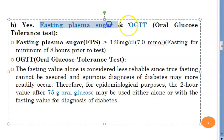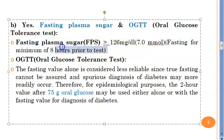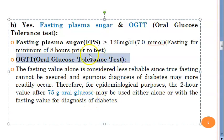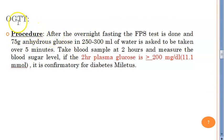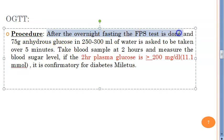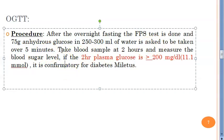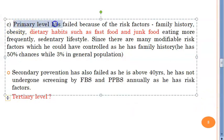For confirmation, do a fasting plasma glucose — ask the patient to come without eating for 8 hours; if it is greater than 126 mg/dL, diabetes is confirmed. Also do an oral glucose tolerance test (OGTT). The OGTT procedure: after overnight fasting, measure the fasting plasma sugar first, then give 75 grams of anhydrous glucose dissolved in 250 mL of water, to be consumed over five minutes. Take a blood sample at two hours — if glucose is greater than 200 mg/dL (or 11 mmol/L), it is confirmatory for diabetes mellitus.